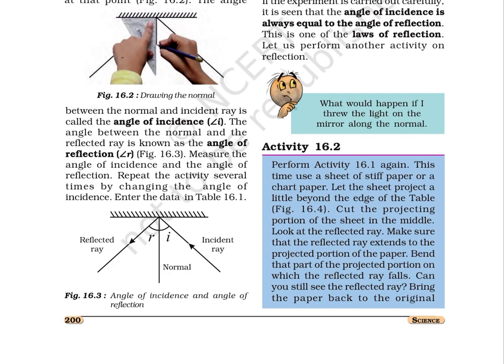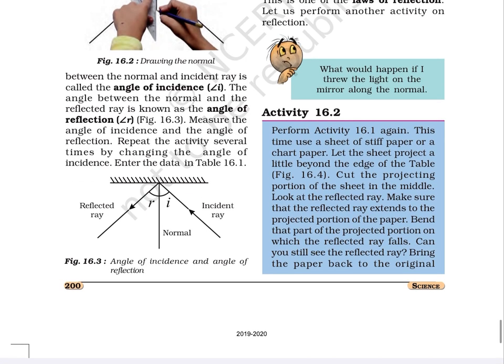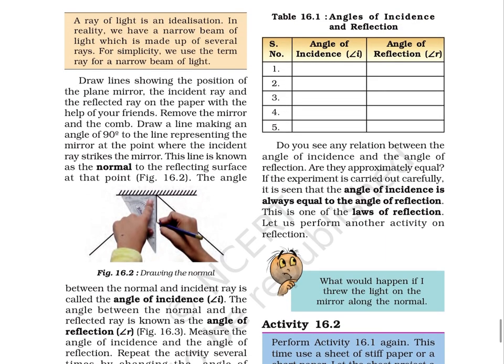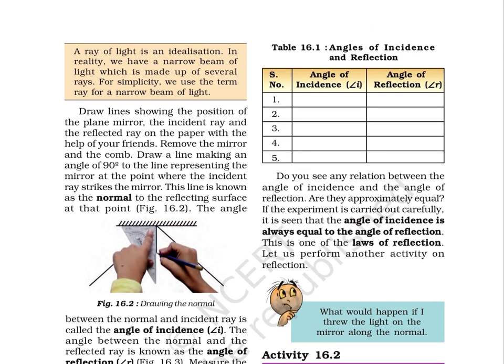Table 16.1 shows angles of incidence and angle of reflection with three columns: serial number, angle of incidence, and angle of reflection. Do you see any relation between the angle of incidence and the angle of reflection? Are they approximately equal? If the experiment is carried out carefully, it is seen that the angle of incidence is always equal to the angle of reflection. This is one of the laws of reflection.